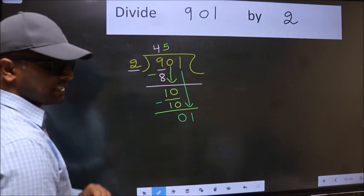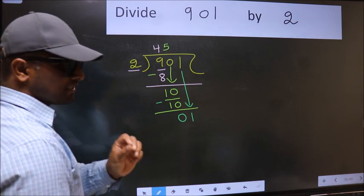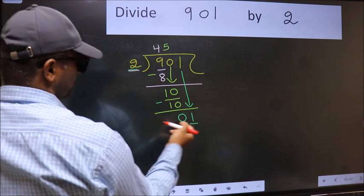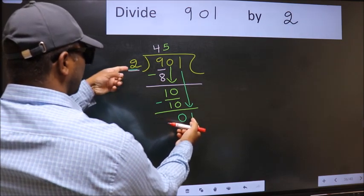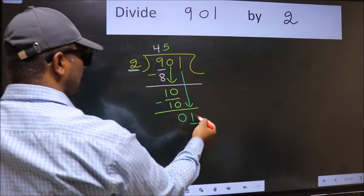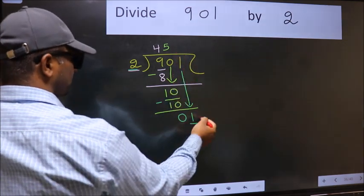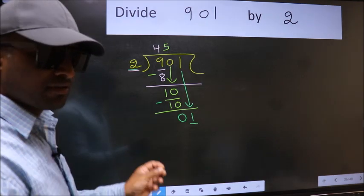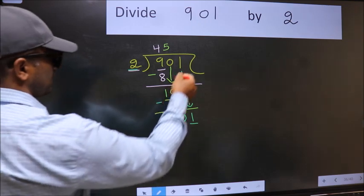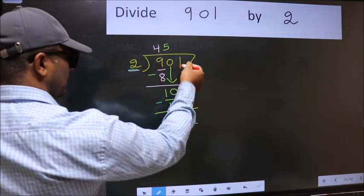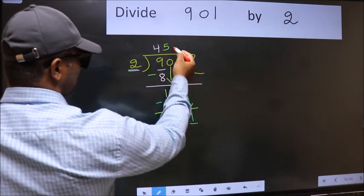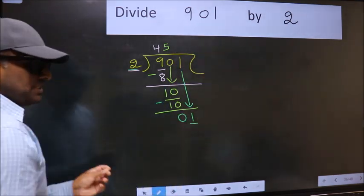And the mistake is this. Here we have 1 and here 2. 1 is smaller than 2. So what many do is they directly put dot and take 0. Which is wrong. Why is it wrong? Because just now you brought this number down, and in the same step, you want to put dot and take 0. Which is wrong.